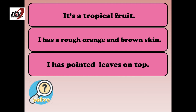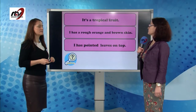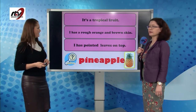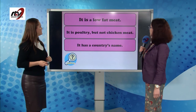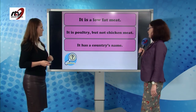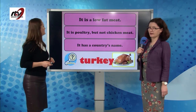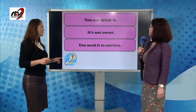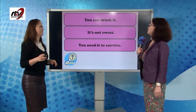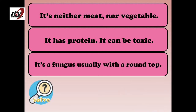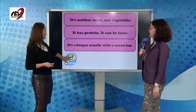It's a tropical fruit. It has a rough orange and brown skin. It has pointed leaves on top. It's the pineapple. Next: it is a low-fat meat, poultry but not chicken. It has a country's name. It's turkey. Next: you can drink it, it's not sweet, and you need it to survive. It's water. Next: it's neither meat nor vegetable. It has protein and can be toxic. It's a fungus, usually with a round top, and you can see it in the forest. It's the mushroom.